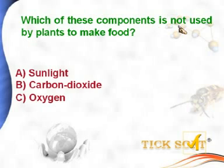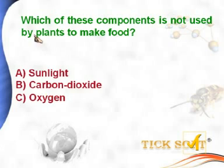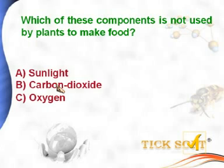Which of these components is not used by plants to make food? Options: (a) sunlight, (b) carbon dioxide, (c) oxygen. Sunlight is definitely important for a plant to make food, and carbon dioxide is also important. Oxygen is not used by plants to make food, so option C, oxygen, is the answer.